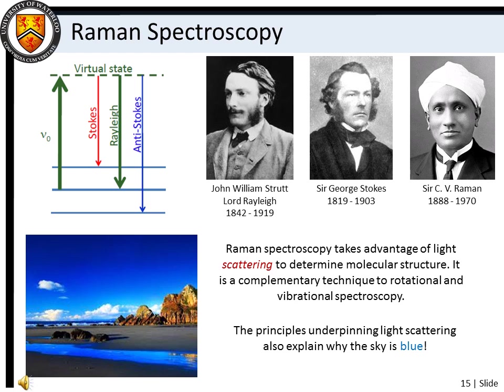You will see that Raman spectroscopy may be thought of as complementary to infrared spectroscopy. Rather than measuring absorption or emission of light, Raman spectroscopy instead measures the light that is scattered by molecules. Among other things, Raman spectroscopy is used to monitor natural gas emissions and to non-invasively scan biological membranes. In our discussions of Raman spectroscopy, you will learn why the sky is blue and why sunsets are red.